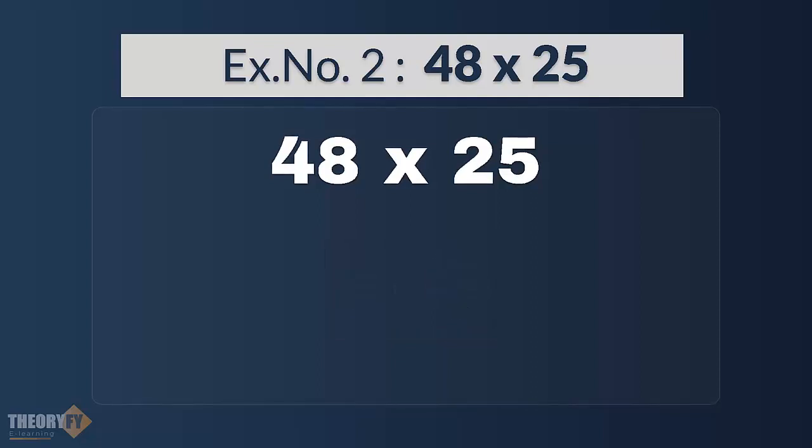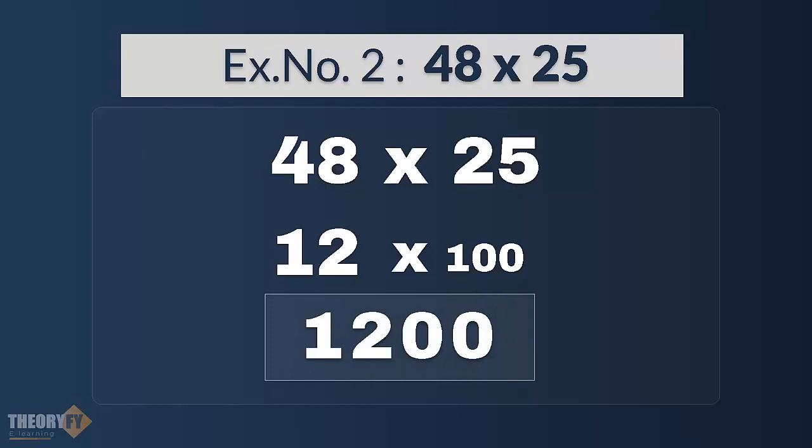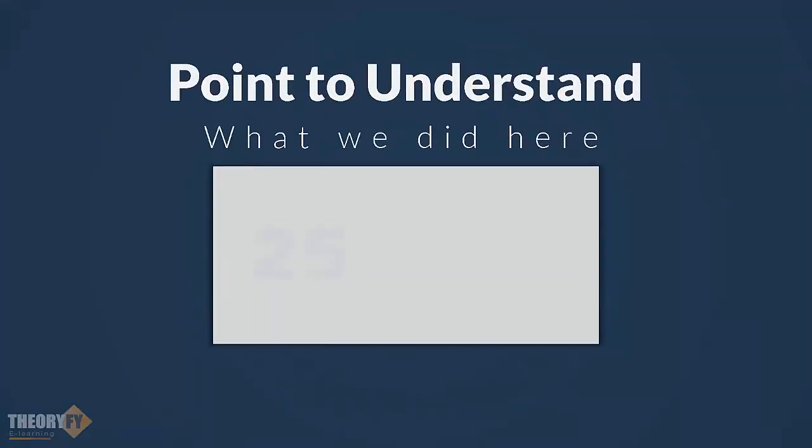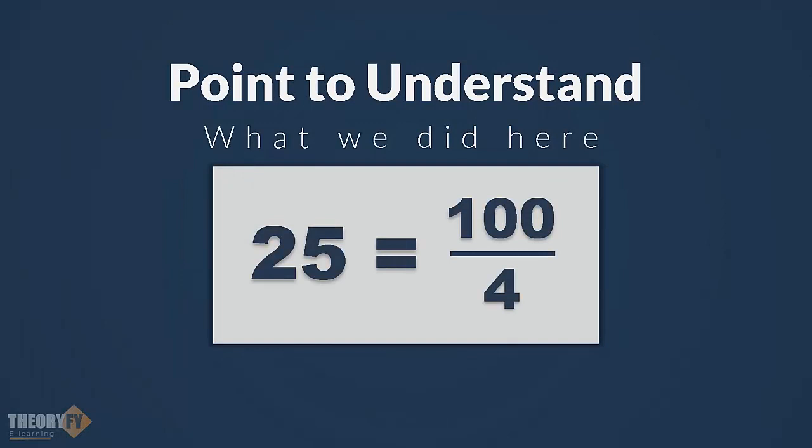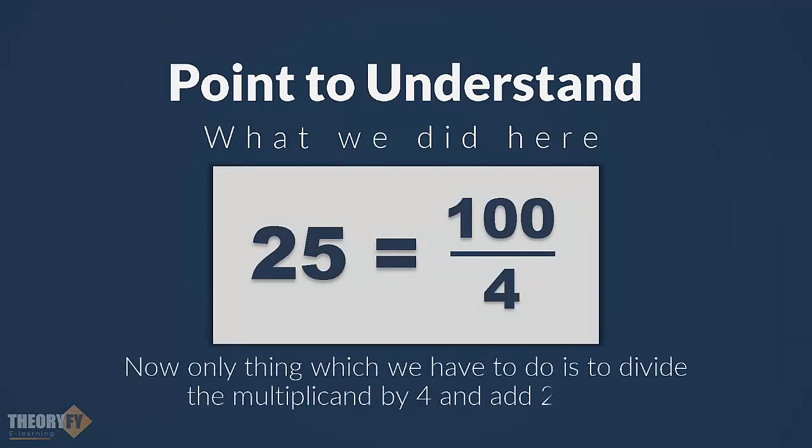How we do it? First, like this. Then, first divide multiplicand by 4 and then we have to put two 0s. So, 48 divided by 4 is 12 and then simply put two 0s after it. You have your answer which is 1200 in this case. Now, just to sum up 25 is actually 100 divided by 4. Now, only thing which we have to do is to divide the multiplicand by 4 and then after division, just add two 0s. You will have your answer.